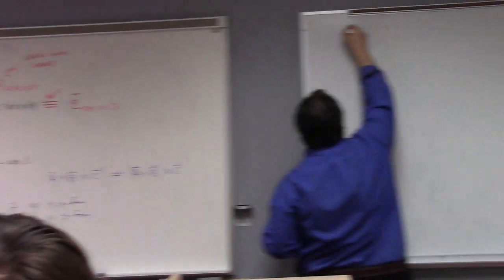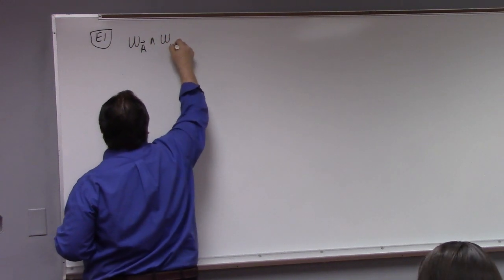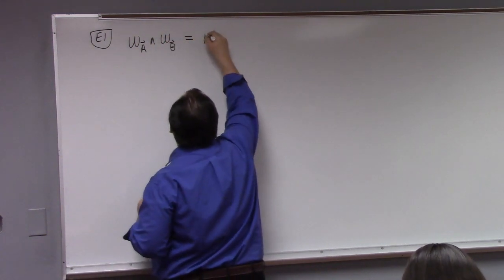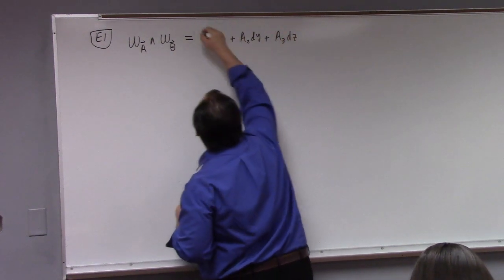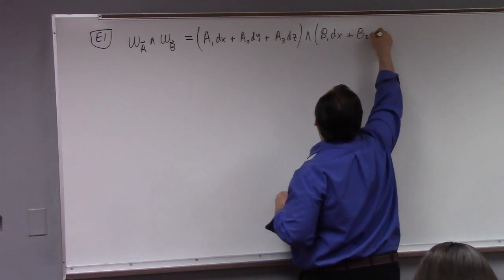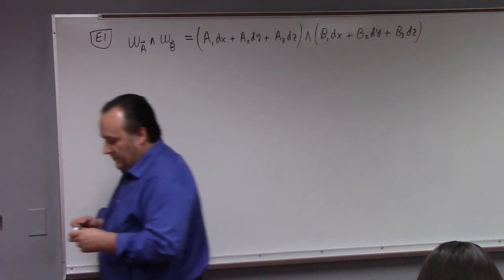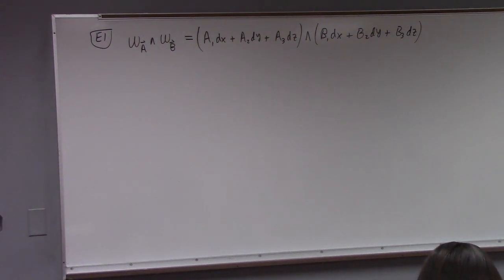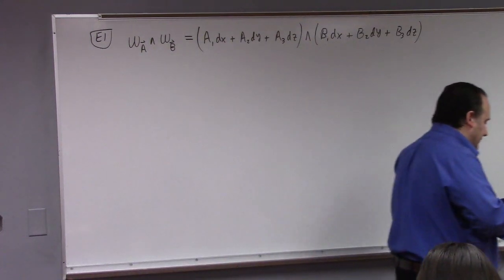Let's look at an example. What happens if we look at omega A wedge omega B? That's a1 dx plus a2 dy plus a3 dz, wedged with b1 dx plus b2 dy plus b3 dz. I'm going to tell you about the algebra of the wedge product, then the differential calculus, and then the integral calculus of the wedge product — a very short course.